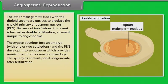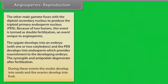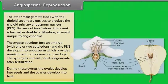The zygote develops into an embryo with one or two cotyledons, and the PEN develops into endosperm which provides nourishment to the developing embryo. The synergids and antipodals degenerate after fertilization. During these events, the ovules develop into seeds and the ovaries develop into fruit.